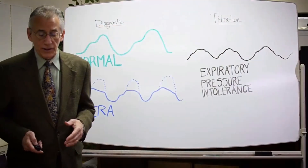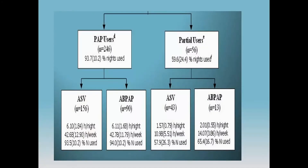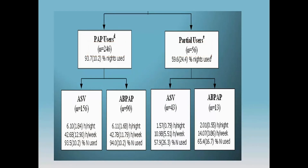To highlight this, we divided those who completed the project — which was retrospectively looked at in a chart review — into PAP users and partial users. Those who completed were those who were actually using PAP at some level. The two groups are made up of 246 in the users and 56 in the partial users. The ASV and ABPAP patients were using the devices quite a bit — more than six hours a night, often averaging close to 90% of nights or more. The partial users were averaging more in the 10 to 15 hours per week.